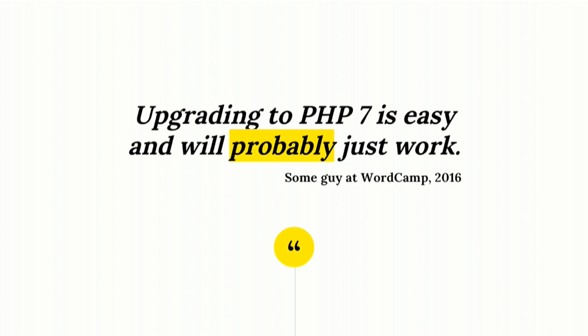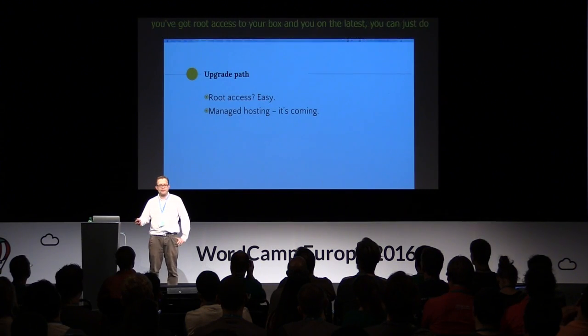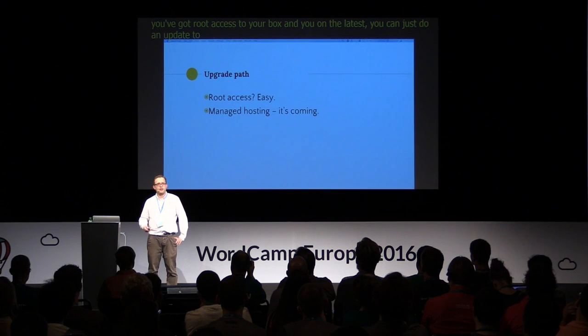My main takeaway today: upgrading to PHP 7 is really easy and will probably just work. I've done three code bases now — one of them literally took about two hours. We set aside a couple of weeks, and two hours in, it was all done. If you've got root access to your box and you're on the latest Ubuntu, you can just do apt-get install to PHP 7. Otherwise you have to install the repos, but again, they're really easy.